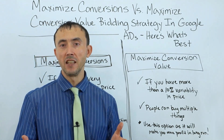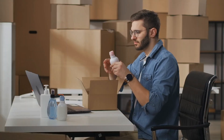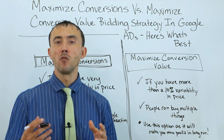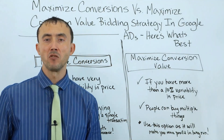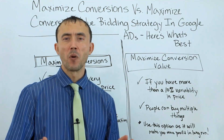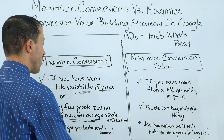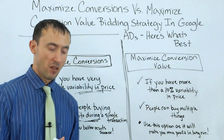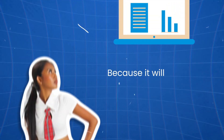If you're just tracking leads by itself and you need conversions, maximize conversions bidding strategy is more so the one you're going to go with. If you're an e-commerce company tracking cart purchases, you may still use maximize conversions bidding strategy even though you have cart revenue flowing into your ad account — specifically if you have very little variability in the price of the items that you sell, within plus or minus 20% of one another, or very few people are buying multiple units during a single transaction. In that case, maximize conversions bidding strategy should be the better option because it'll get you better results sooner.